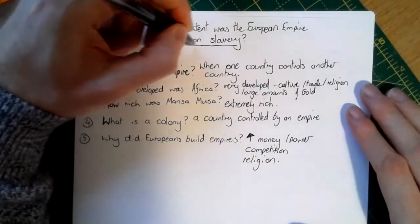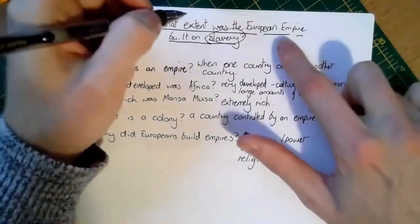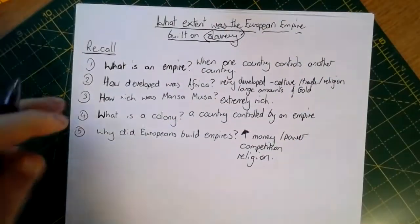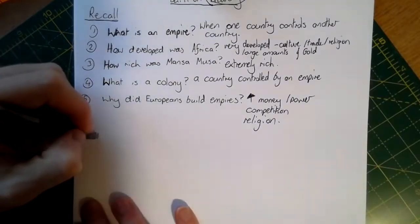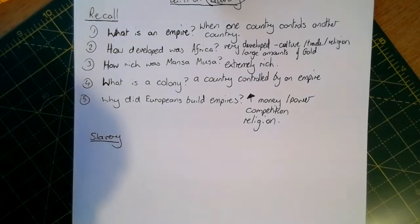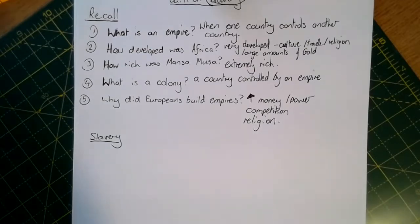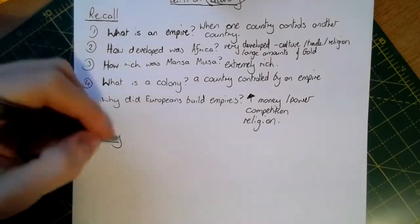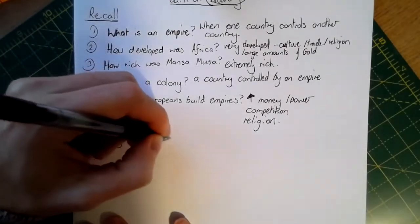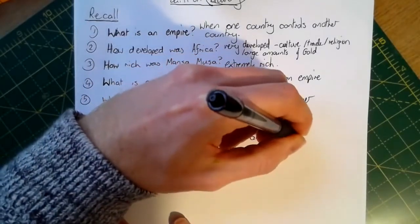To answer the question about European empires and slavery, we need to unpick it. We already know what European empires are. Now we need to look at what slavery actually is. Slavery is when one person owns and controls another person.